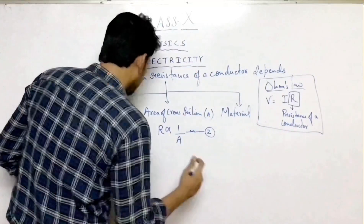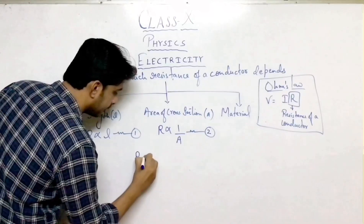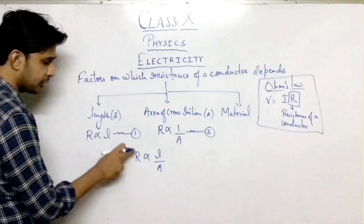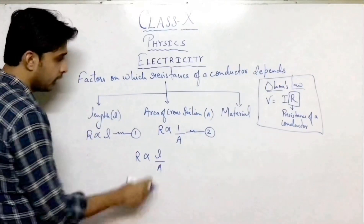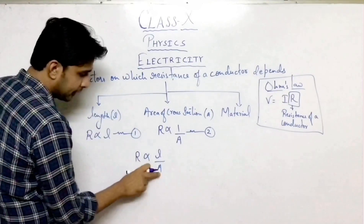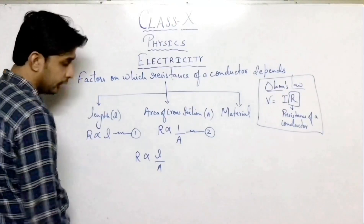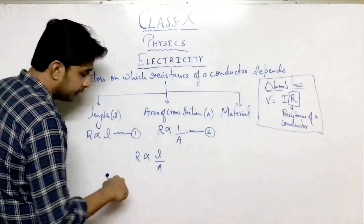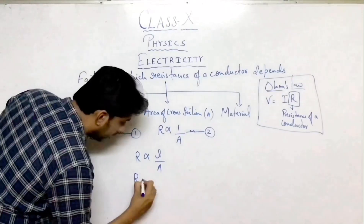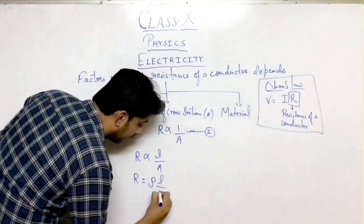For this, we combine the first and second relationships: R is proportional to L divided by A. From the first factor, R is directly proportional to L; from the second, R is inversely proportional to area of cross section, because A is in the denominator. Now, we replace the proportionality sign with an equal sign by adding a constant, giving us R = ρL/A.